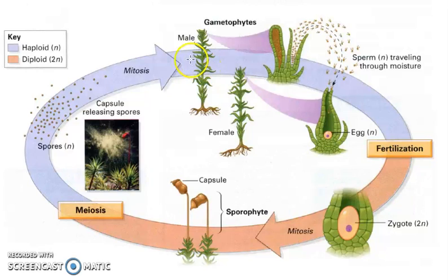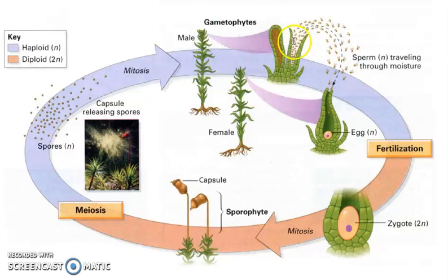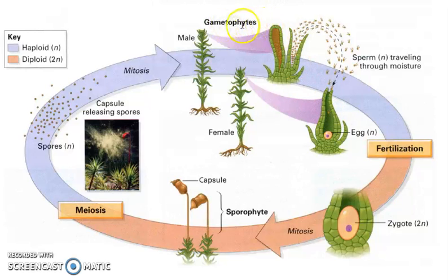These guys like to live in wet environments, and the reason why they have to live in wet environments is because of the sperm that the males produce — they will actually swim over to a female. That is a very important part of why they have to be in water: their reproduction. And this is all in the gametophyte stage.